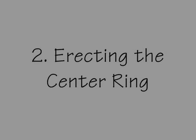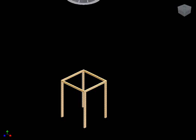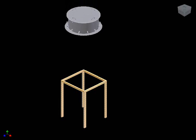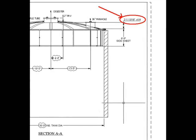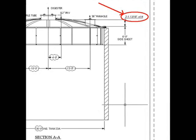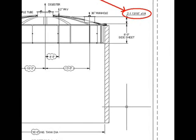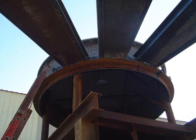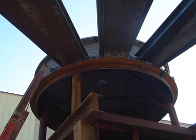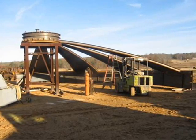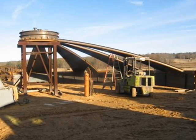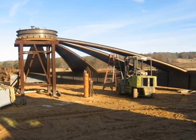Number two, erecting the center ring. Position the center ring on supports at the exact center of the cover and adjust for level and proper elevation. The elevation of the center ring can be found on West Tech's general arrangement drawings. The center ring support must remain in place until the cover plates have been welded to the radial beams. Maintaining the main elevation is crucial to ensuring the radial beams fit properly.